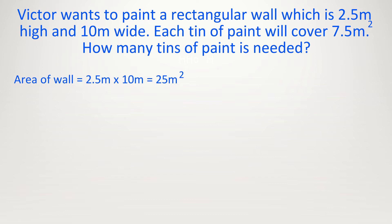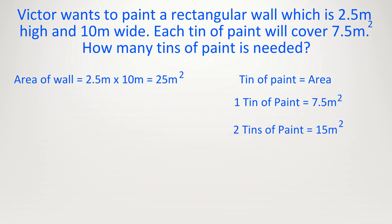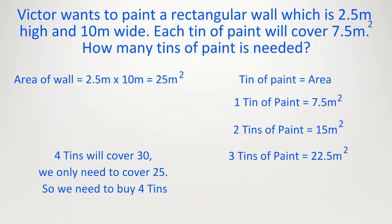Now we need to work out how many tins will fit into the wall, so this is division. Let's count up in 7.5s: 7.5, then 15, then 15 plus 7.5 equals 22.5. But we have 25 as the area for the wall. So how many tins do we need to buy — 3 or 4? The answer is 4, because 7.5 times 4 equals 30. That is higher than 25, but we need to paint the whole wall so we need to buy 4 tins.